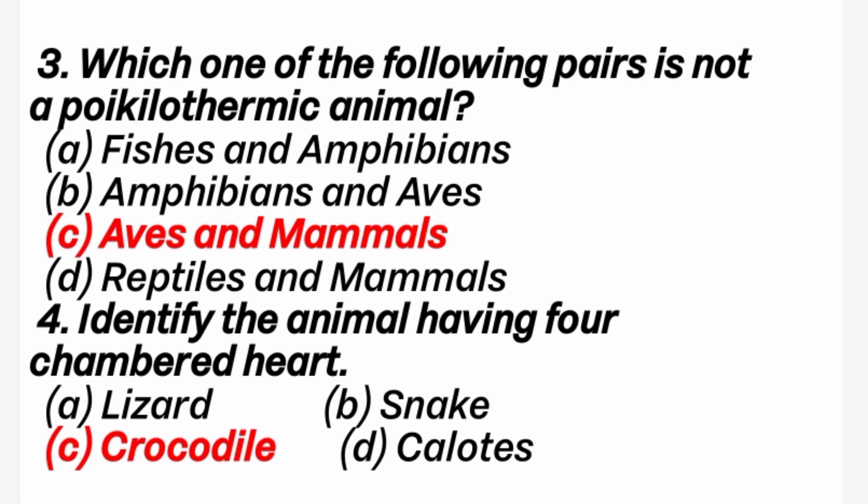Fourth question: identify the animal having a 4-chambered heart. Answer is C option, crocodile. Among reptiles, crocodile is the only one with a 4-chambered heart, while other reptiles have a 3-chambered heart.